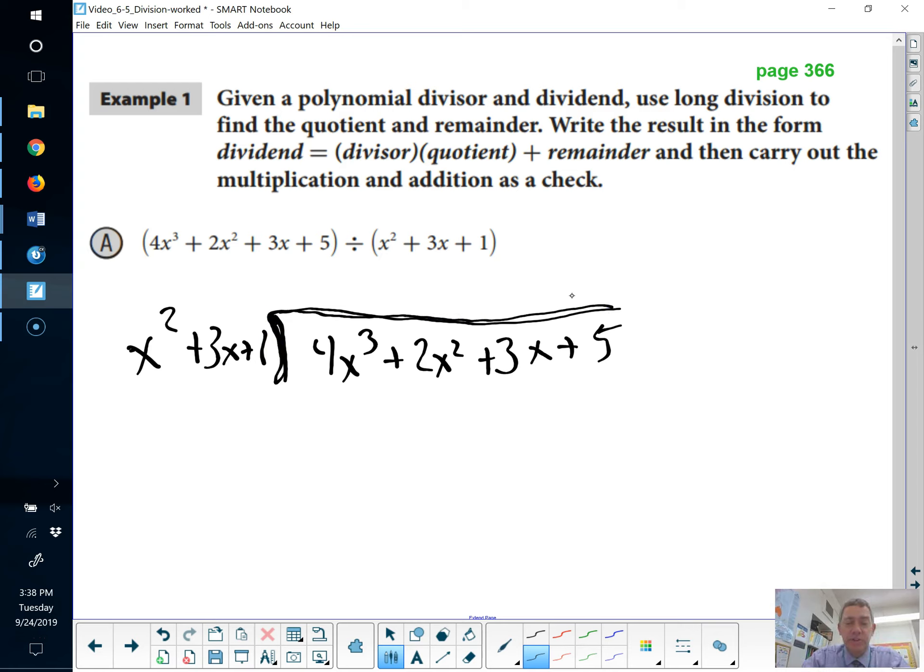Now, the first question is, how many times does x squared go into 4x cubed? We're not really worried about the other little pieces of it yet. We're just worried about the first terms, the x squared and 4x cubed. And the answer to how many times does x squared go into 4x cubed is it goes in 4x times. I'm going to line up the 4x over the column that has all of the x's in it.